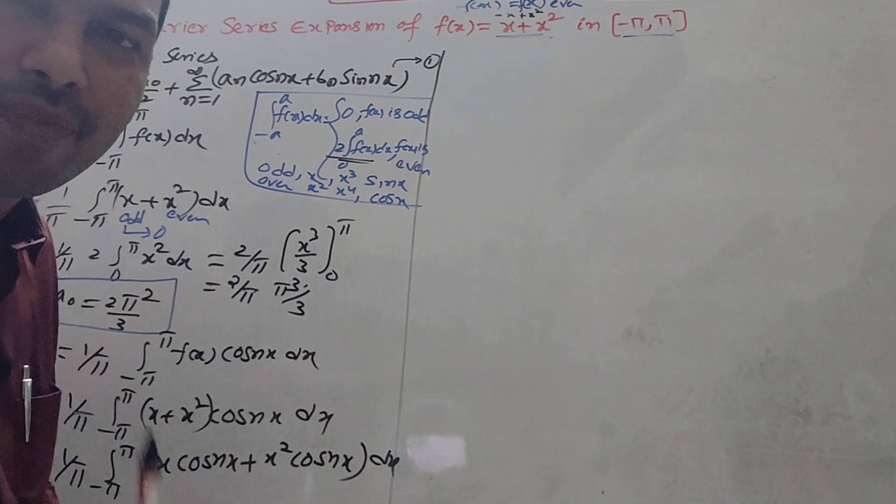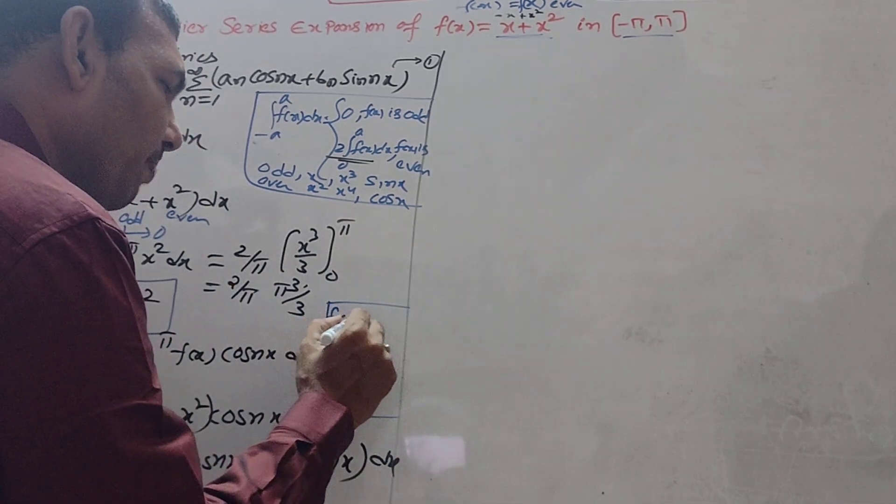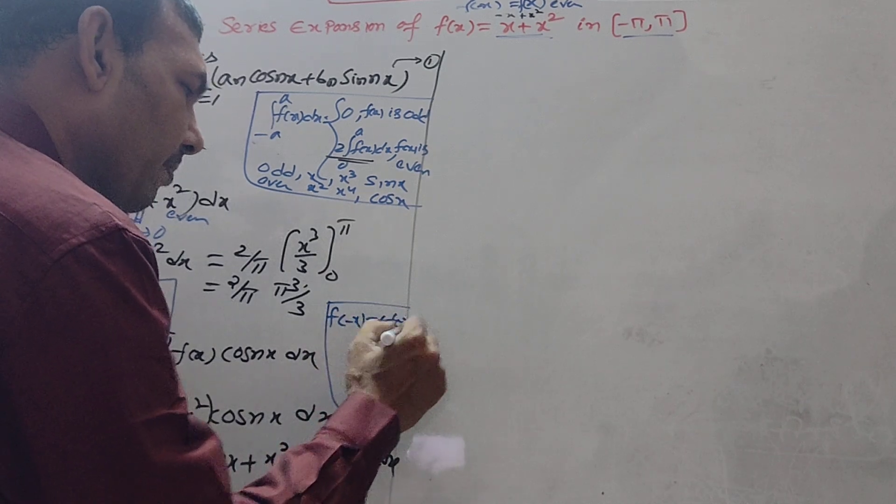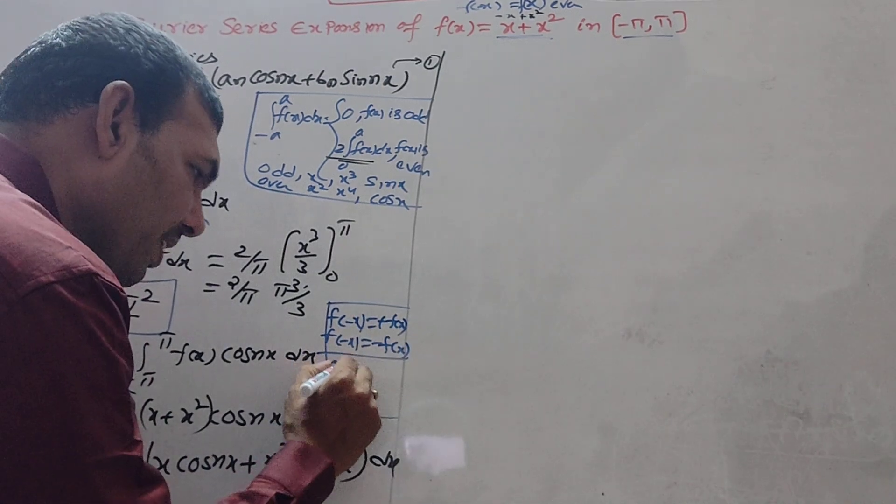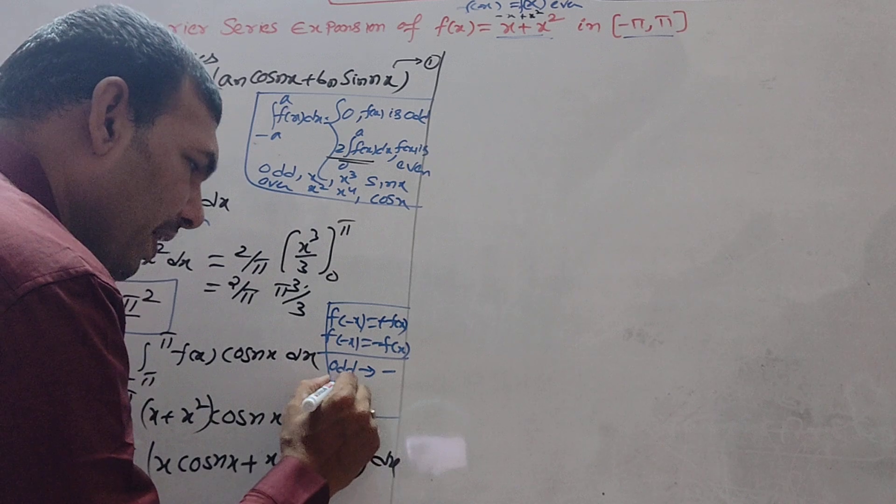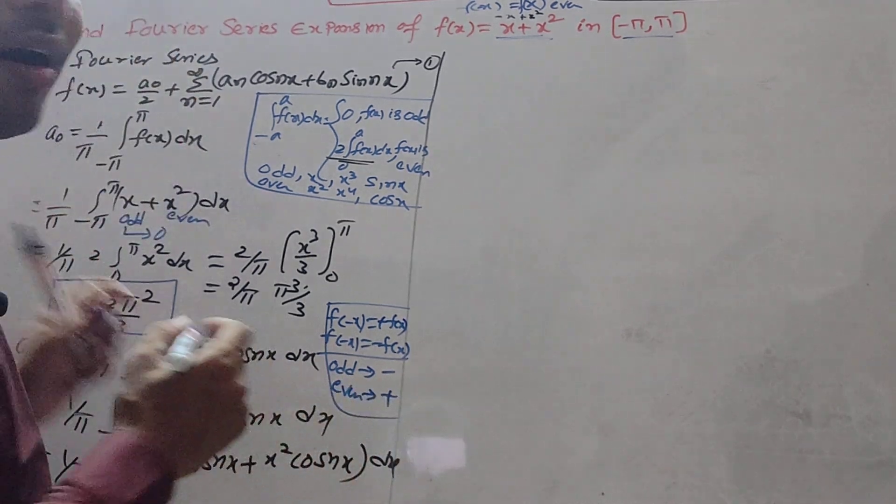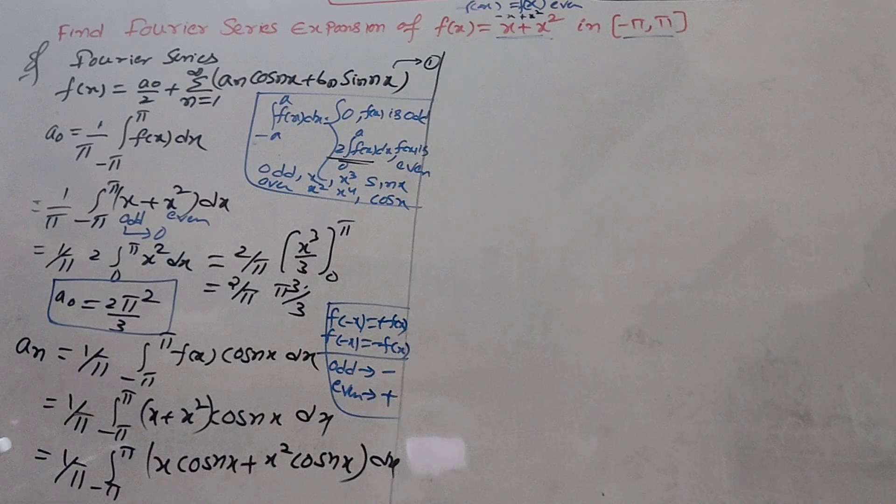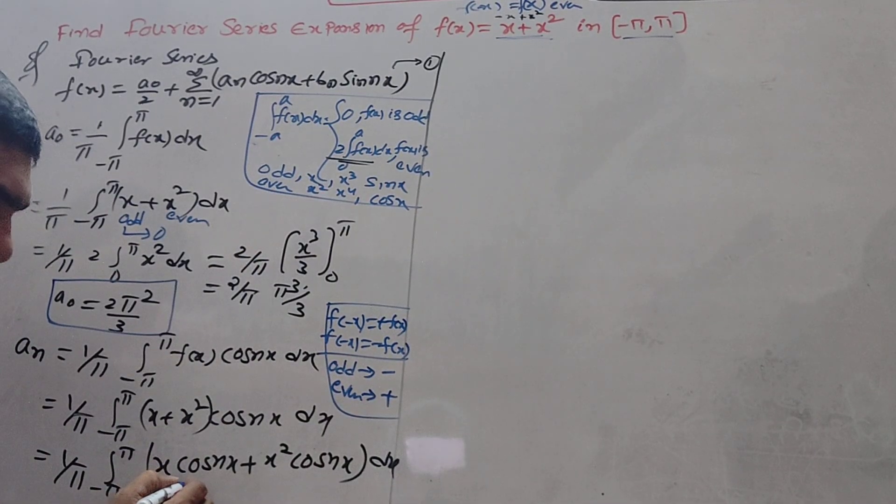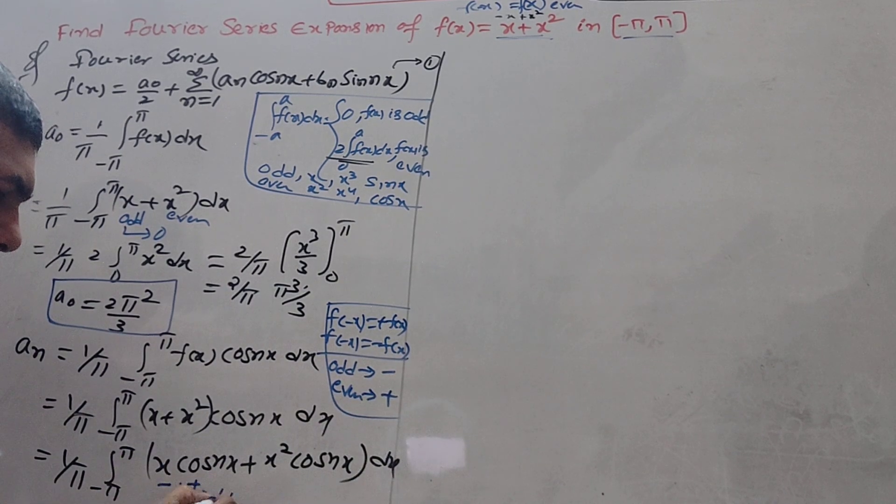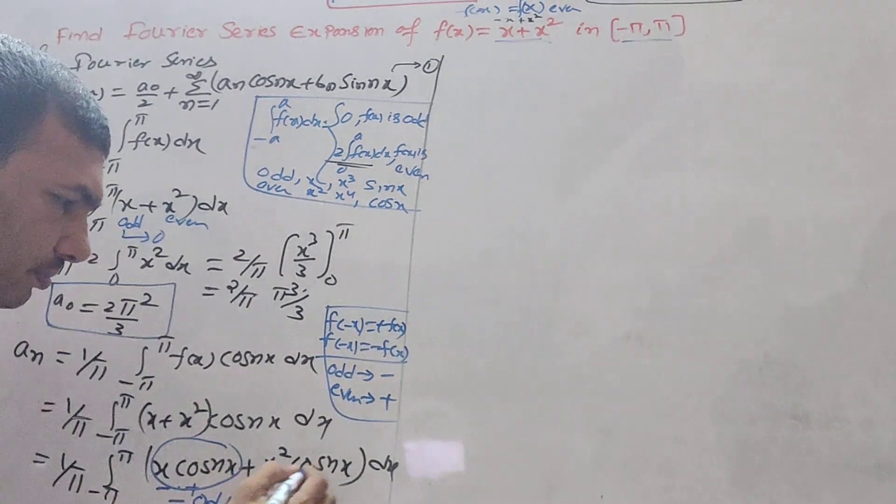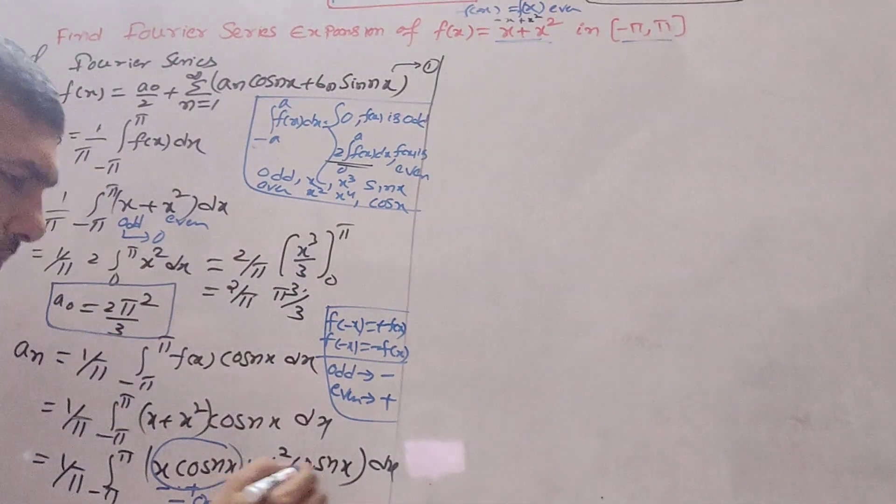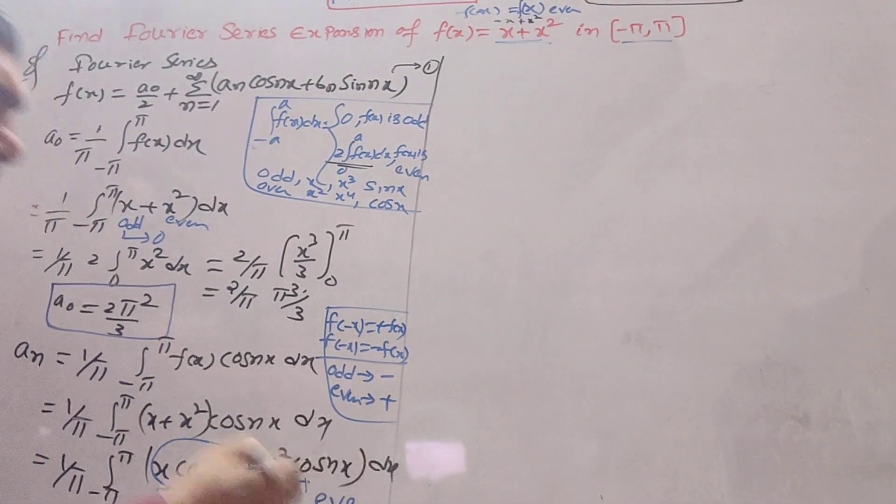The technique is: assume odd as minus, even as plus. x is odd (minus), cos is even (plus), so minus times plus equals minus. So this is an odd function. The first term is odd, this becomes 0. x² is even (plus), cos nx is even (plus), plus times plus equals plus, so this is even.